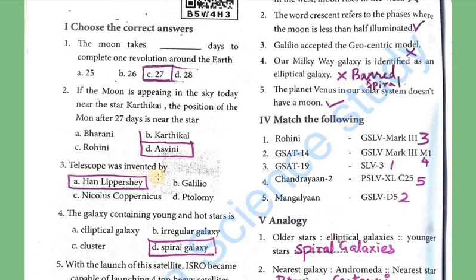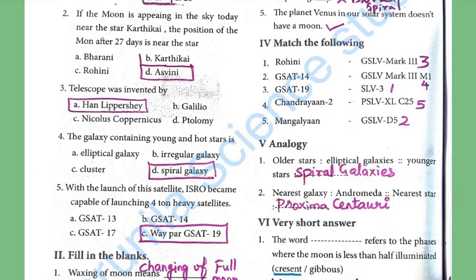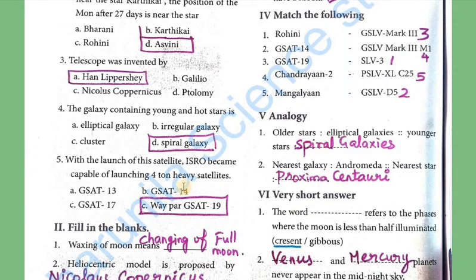Third: The telescope was invented by Hans Lippershey. Galileo used the telescope to see Jupiter and Saturn's rings. Fourth: The galaxy containing young and hot stars is the spiral galaxy. Fifth: With the launch of the GSAT-19 satellite, ISRO became capable of launching heavy satellites of 410 kg.